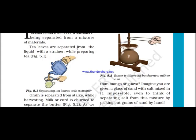In our day-to-day life we see many different examples where we use the method of separation. For example, we separate the tea leaves from the tea with the help of a strainer — strainer means chalni. As you can see here in this diagram, the tea leaves are separated from the tea because the tea leaves are not useful for us after the tea has been prepared.